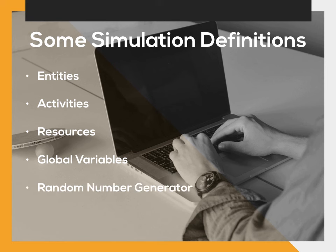A random number generator is something we'll discuss extensively in this class because it's a key part of simulation. Anything that is random within the system must use a random number generator to determine when things will happen. For example, in our emergency room scenario, how do you determine when people arrive to be seen? People don't arrive in a predictable fashion, so a random number generator provides that randomness to arrival times. We'll discuss this in much greater detail in a future module.